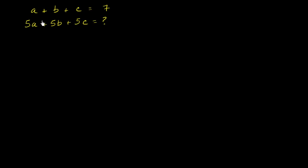So let's try this first one. They tell us a plus b plus c is equal to 7, and then they ask us, what is 5a plus 5b plus 5c equal to? The first reaction is like, well, they just gave me one equation with three unknowns. How do I solve for a, b, or c? Don't I have to be able to solve for a, b, or c in order to figure out what 5a plus 5b plus 5c is?